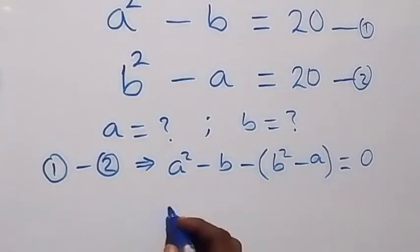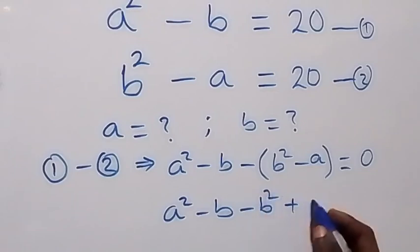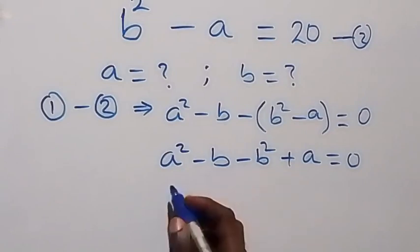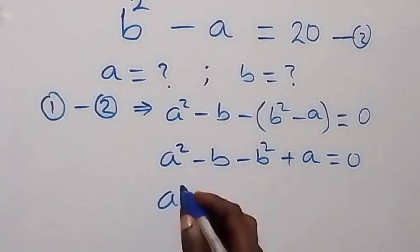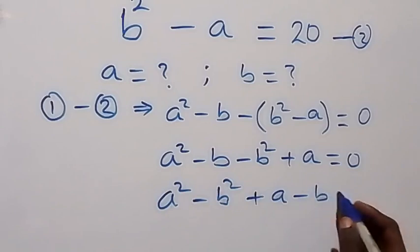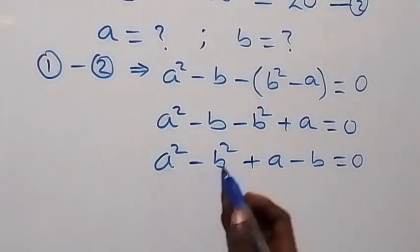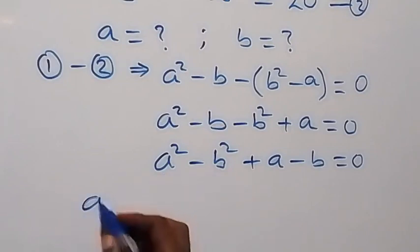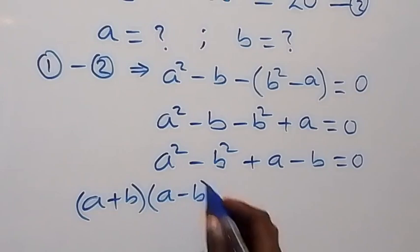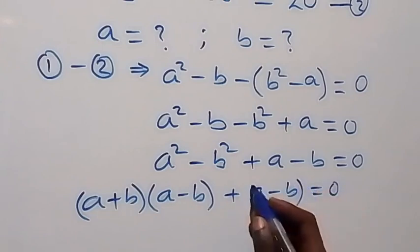We use the minus sign to open the bracket, and this gives us a squared minus b, then minus b squared plus a, now equals zero. From here, let's rearrange and bring the squares together, so we have a squared minus b squared, then plus a minus b, equals zero. We apply the difference of squares: this becomes (a + b)(a - b), then plus (a - b), now equals zero.